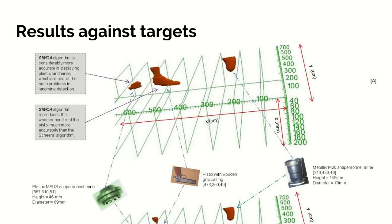Here are some of the results we get, and it's quite remarkable the degree of detail you can see. This was a Browning pistol with a wooden grip metal casing, imaged under the ground, and you can clearly pick out the shape of the pistol. This is a plastic mouse anti-personnel mine, and you can clearly pick that out too.